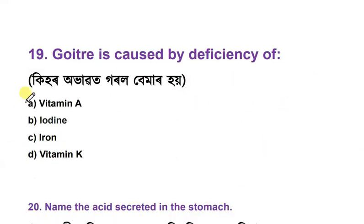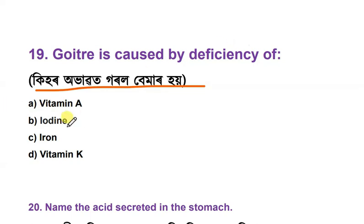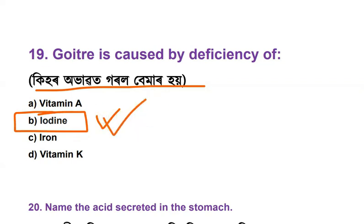Question 19: Goiter is caused by deficiency of what? Options are Vitamin A, iodine, iron, and Vitamin K. The answer is option B — iodine. Vitamin A deficiency causes night blindness, iron deficiency causes anemia, and Vitamin K is involved in clotting of blood.